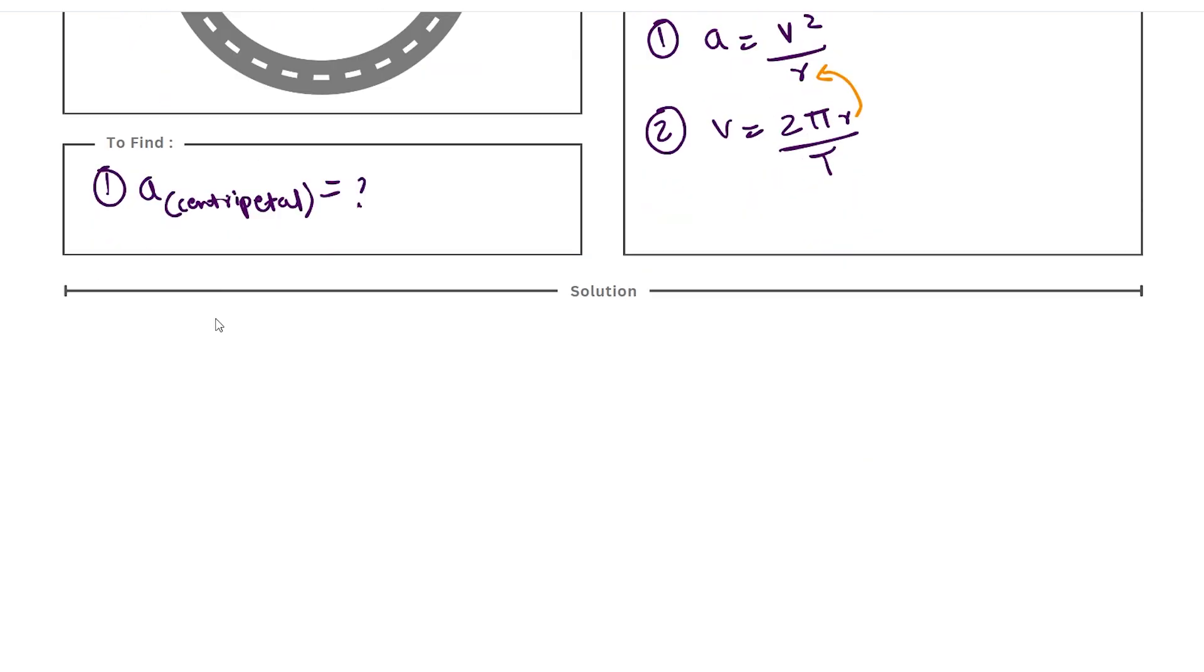So our numerical has two parts. The first part is calculating the radius of the circle. From formula 2, if we substitute all the values, we get 50 = 2πr / 40.